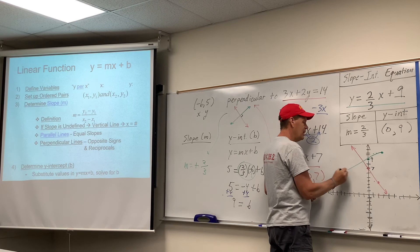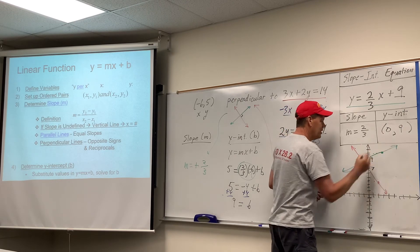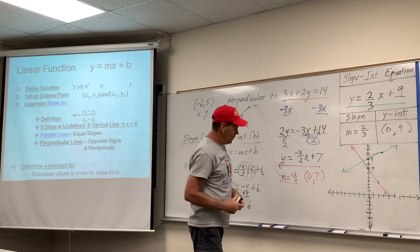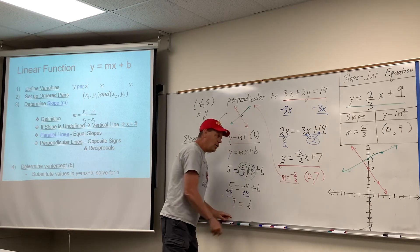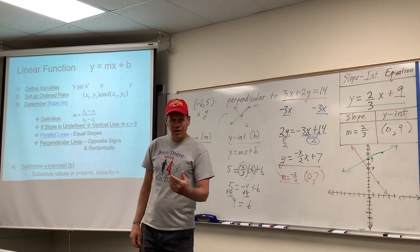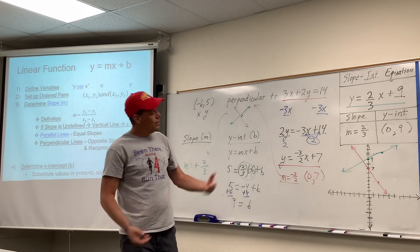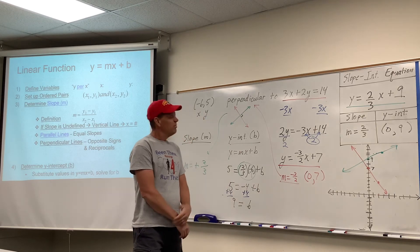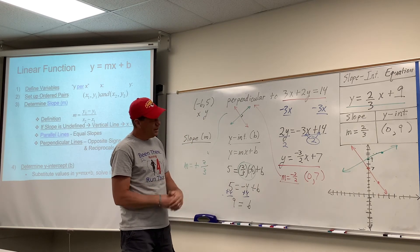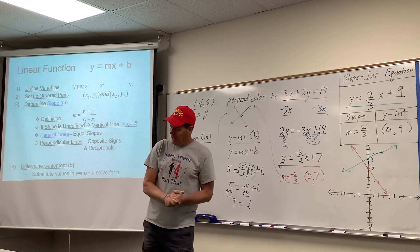And as we graph this, the hope would be, and it might be off a little bit because of a little bit of human error, but the hope would be that the rough visual would be that this green line would cross the red one at a 90-degree angle. And I believe that that looks close enough. Again, my scale isn't perfect, but you get the idea.